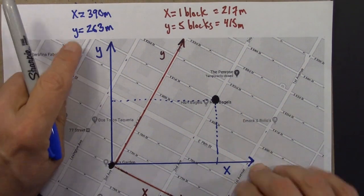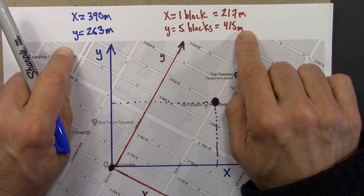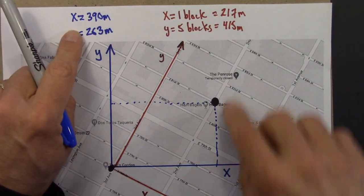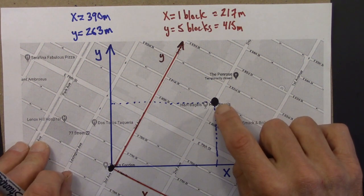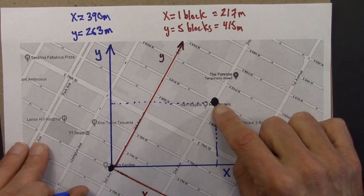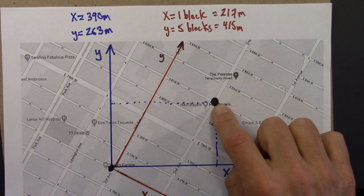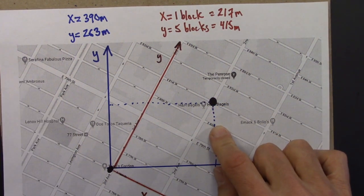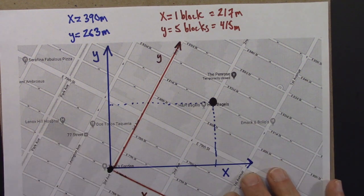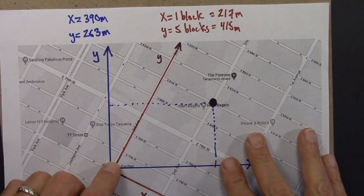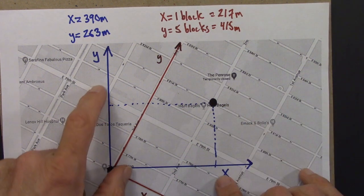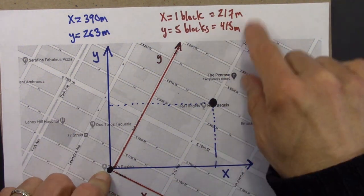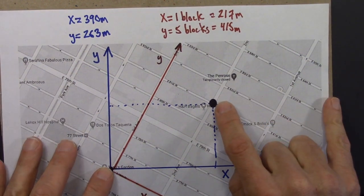So the coordinate values do not agree. The New York City coordinate system says 217, 415 for the location of H&H, while the true north coordinate system says 390, 263. Different coordinate systems give different coordinate positions for the same physical location — H&H Bagels. In the same way, different observers in different inertial reference frames will have different times and positions for an event in spacetime. To summarize: different coordinate systems, different sets of axes, give different values for the same point in space on a map.